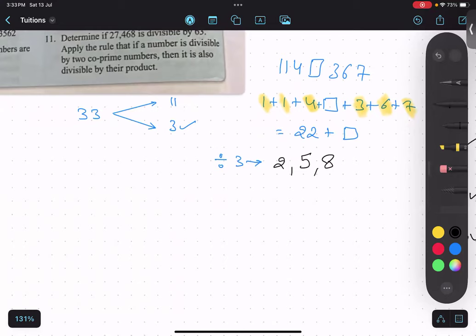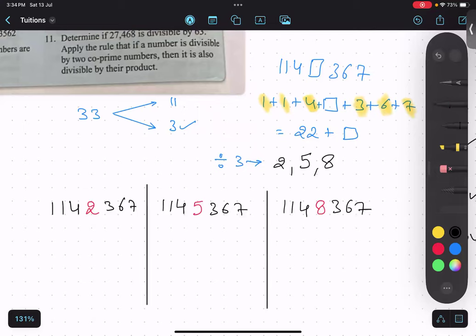So these 3 numbers are there: 1142367, that's one number; 1145367, that's another number; 1148367, that's another number. Now I am going to check for divisibility rule of 11.